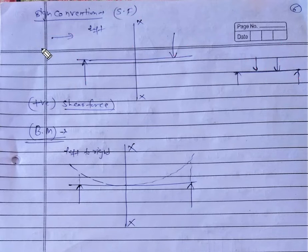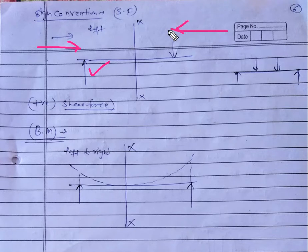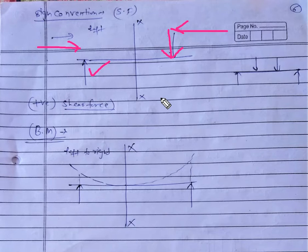In simple words: when approaching from left to right, upward forces are considered as positive and downward forces as negative. That is the sign convention for shear forces. As a hard and fast rule, you can refer to different books, as sign conventions may vary.